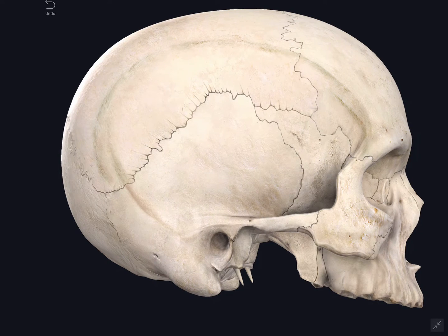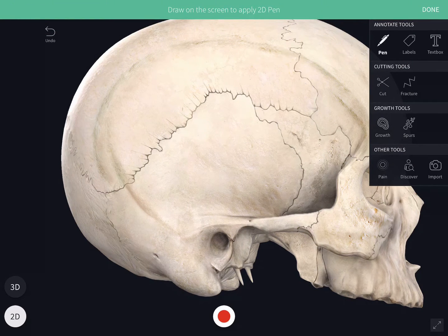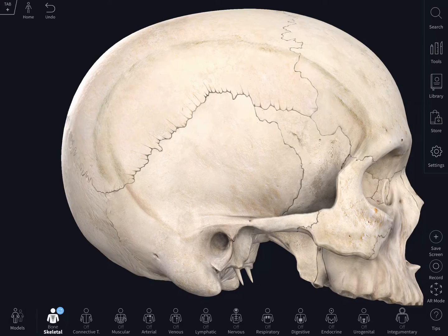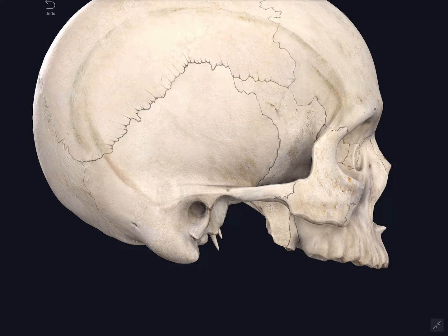The next feature is the zygomatic arch. The zygomatic arch is formed anteriorly one-third by the temporal process of the zygomatic bone. The posterior two-thirds is formed by the zygomatic process of the temporal bone, and connecting these two is the zygomatico-temporal suture. The arch is separated from the side of the skull by a space which is deeper anteriorly and shallow posteriorly. The lateral surface of the zygomatic arch is subcutaneous, and it has an upper border and a lower border.